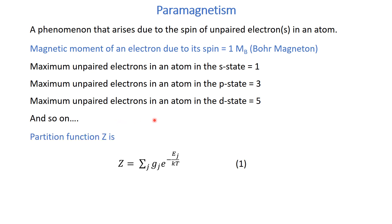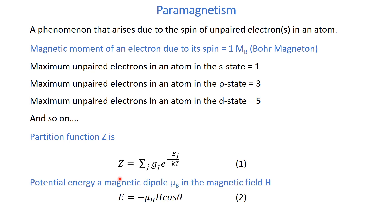Now we are going to calculate different properties of paramagnetism using the partition function. Specifically, we are going to derive the Curie law of paramagnetism. This is the partition function. If we have a magnetic dipole represented by μ_B placed in a magnetic field H, the potential energy of this magnetic dipole is given by a relation where θ is the angle between the magnetic moment and the applied magnetic field H.